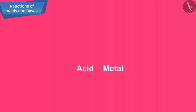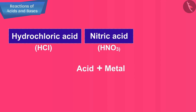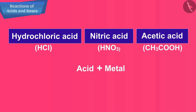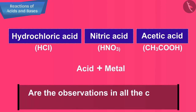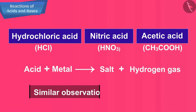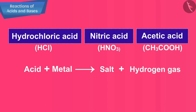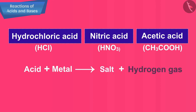Repeat this activity with some more acids like hydrochloric acid HCl, nitric acid HNO3 and acetic acid CH3COOH. Are the observations in all the cases the same or different? You will observe a similar observation in all the cases. So we can conclude that metal reacts with acids to form salt and hydrogen gas.